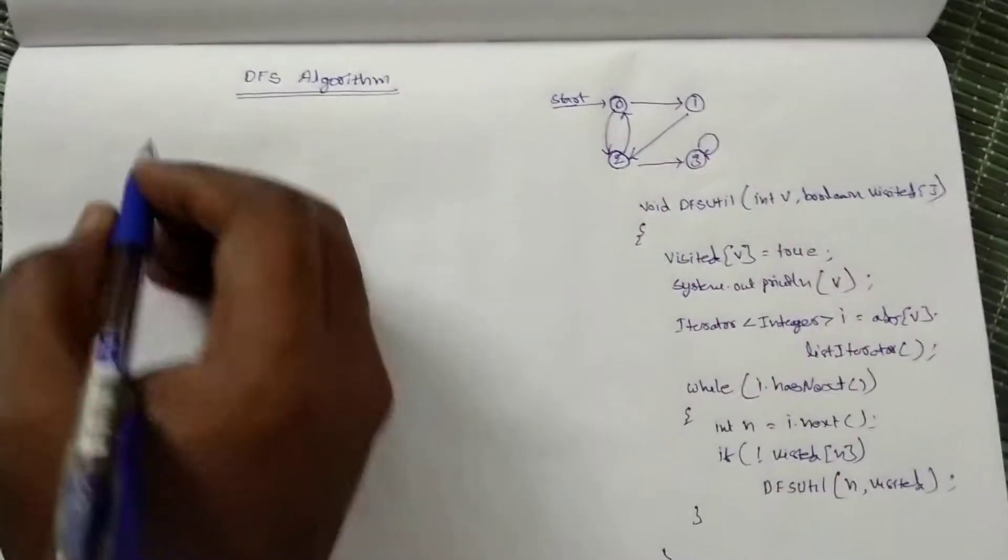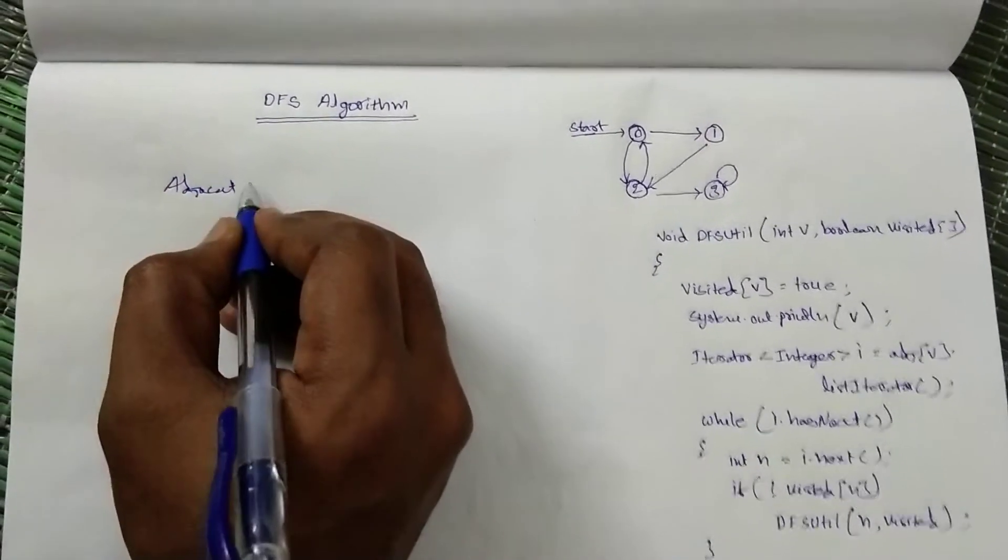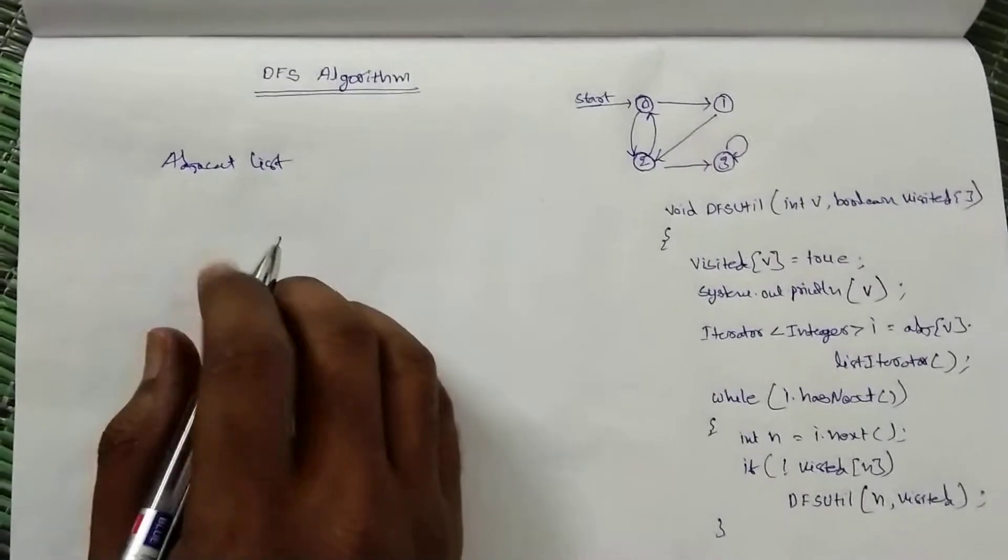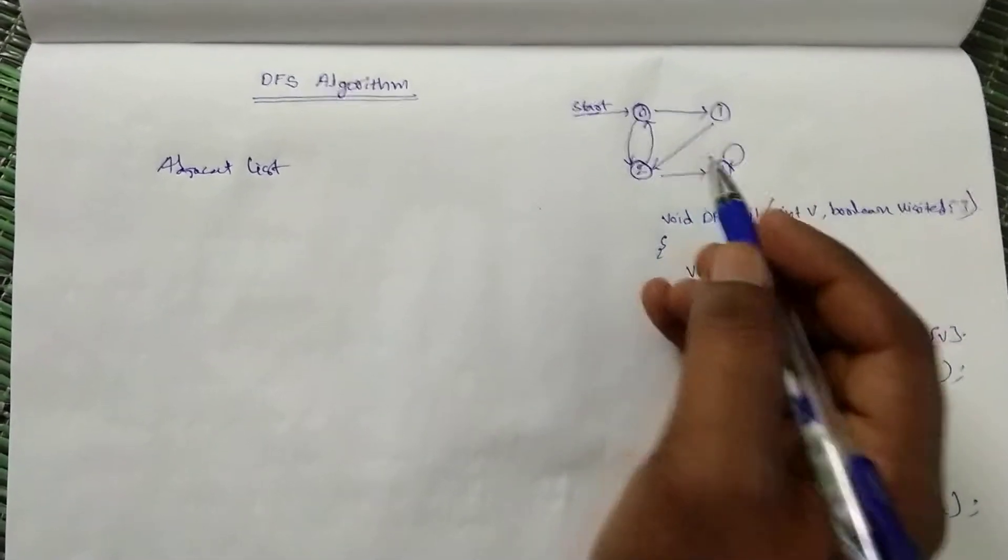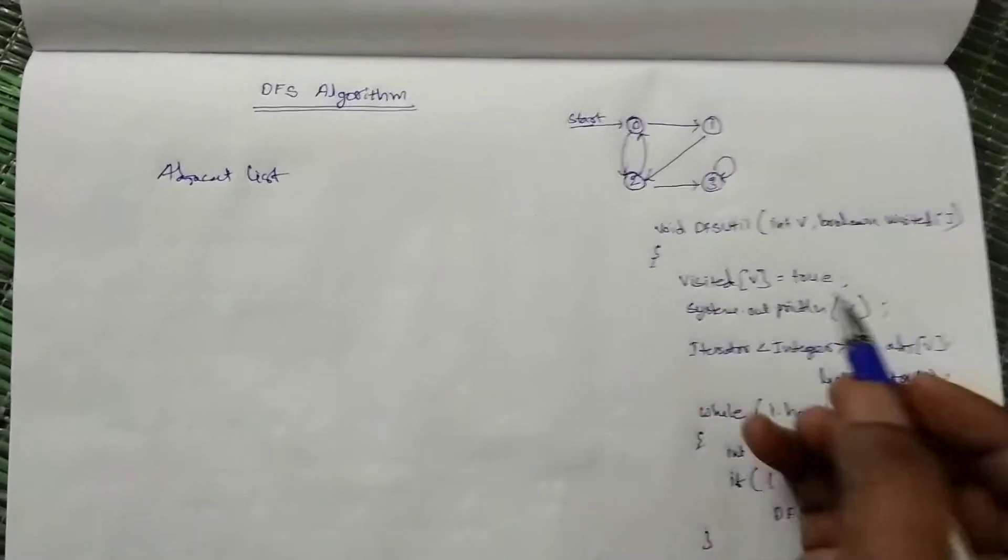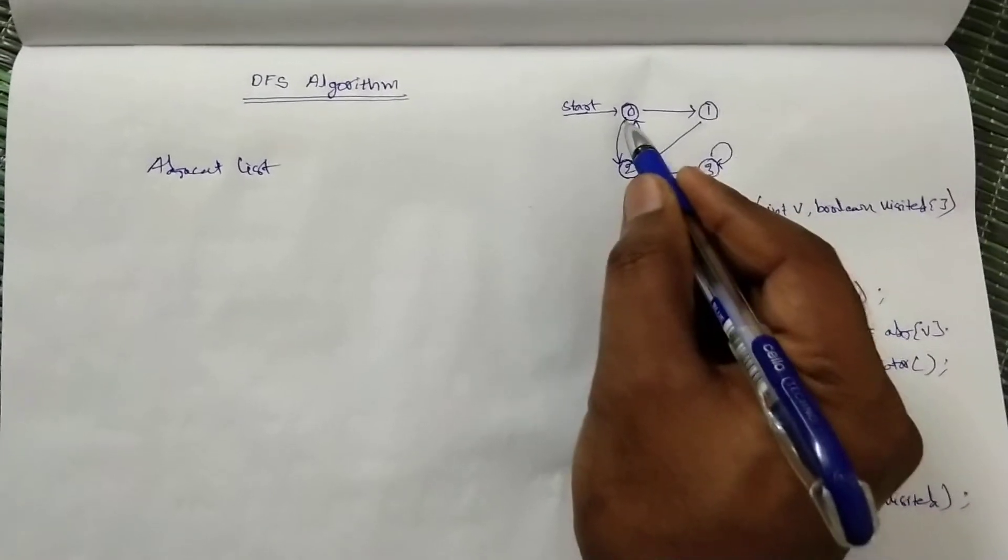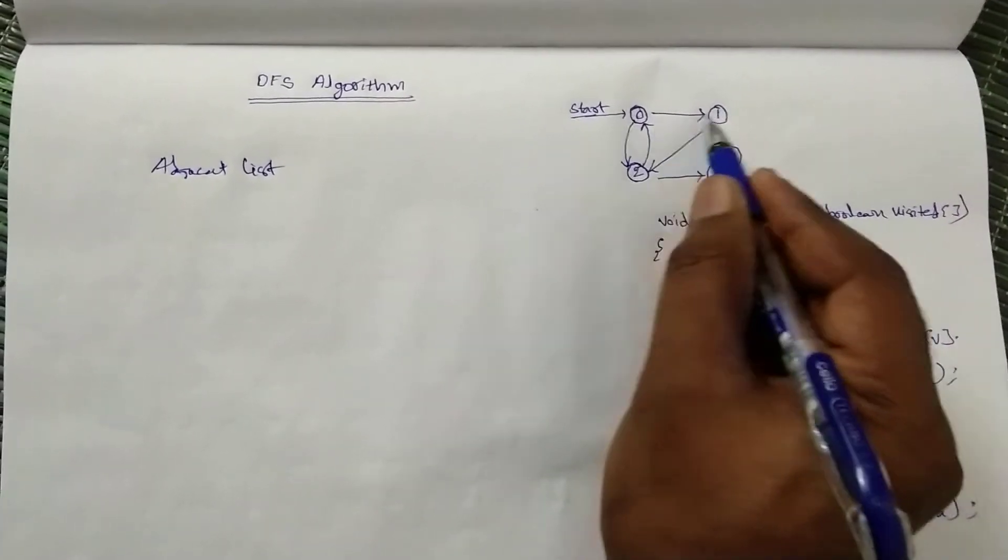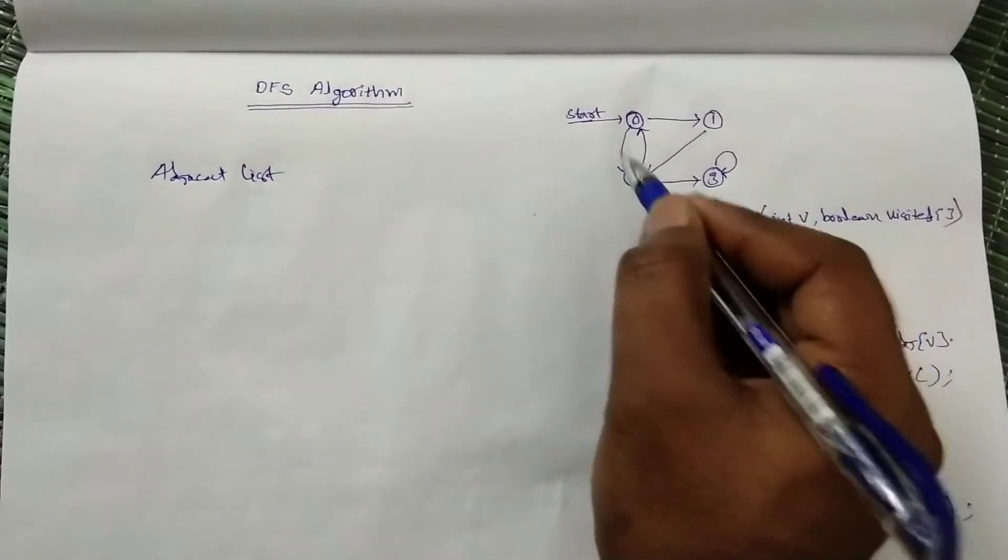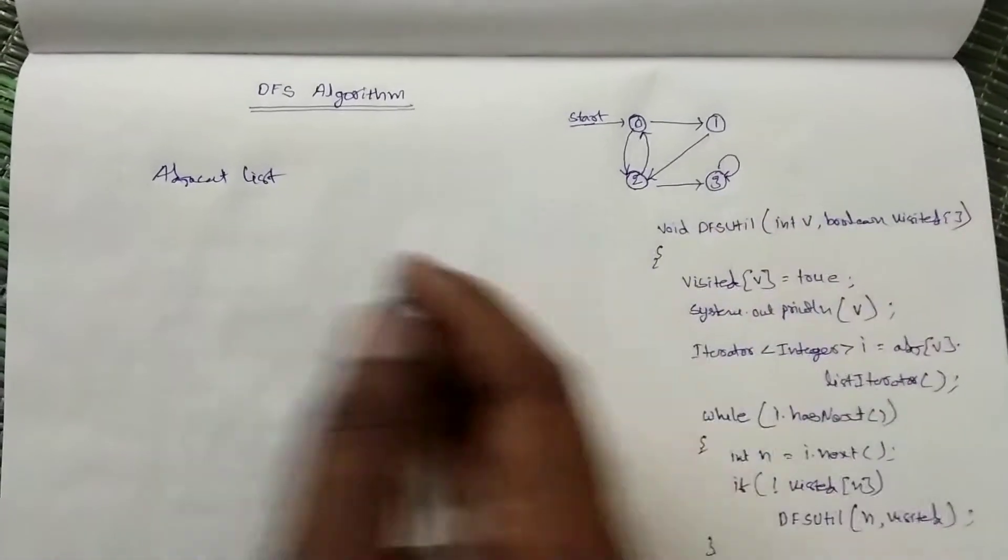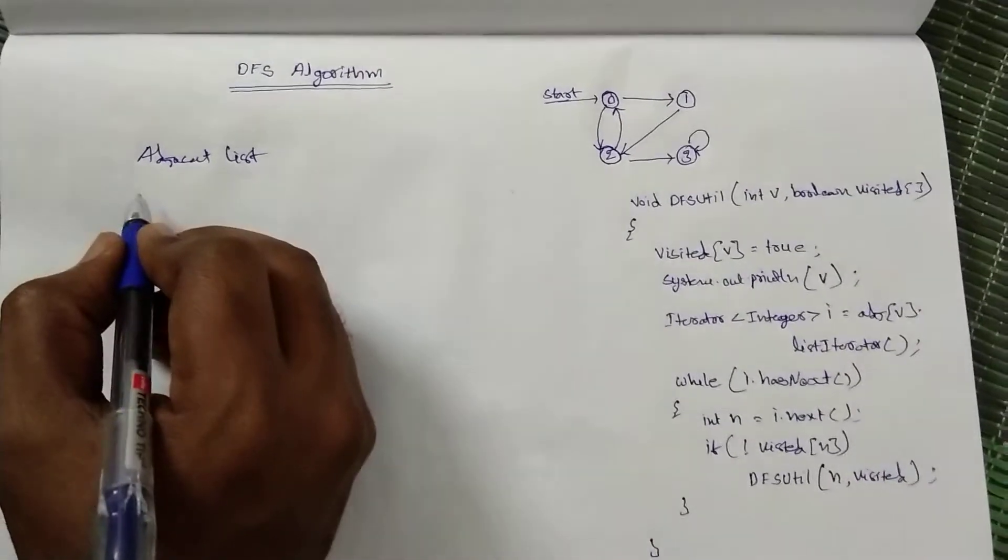How to convert - you can see the previous video. We need to have a visited boolean array to avoid the cycles. There are two cycles if you observe: this is one cycle and this is one cycle. To avoid cycles we will use a visited boolean array.